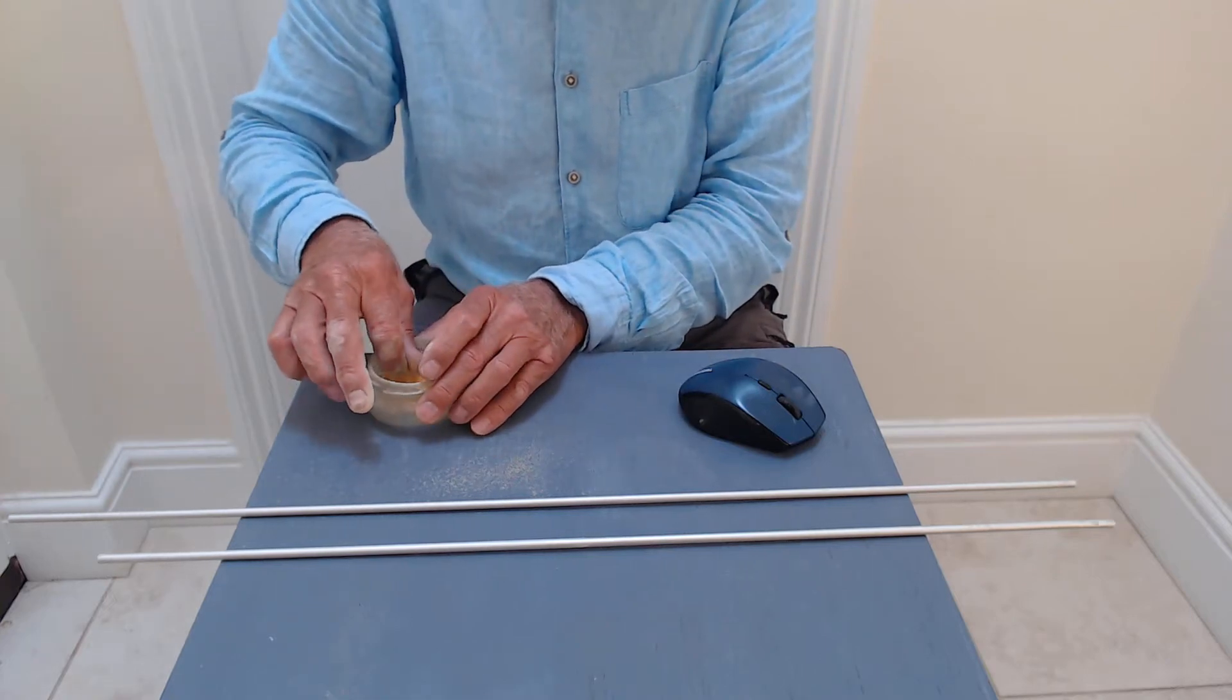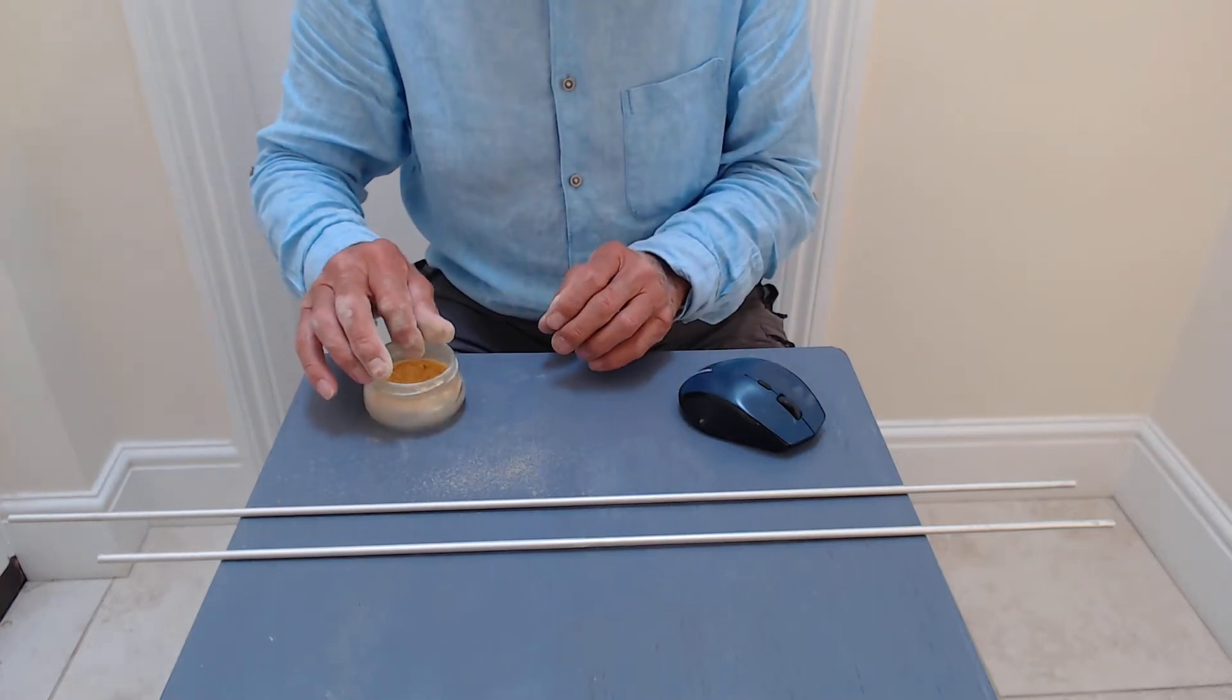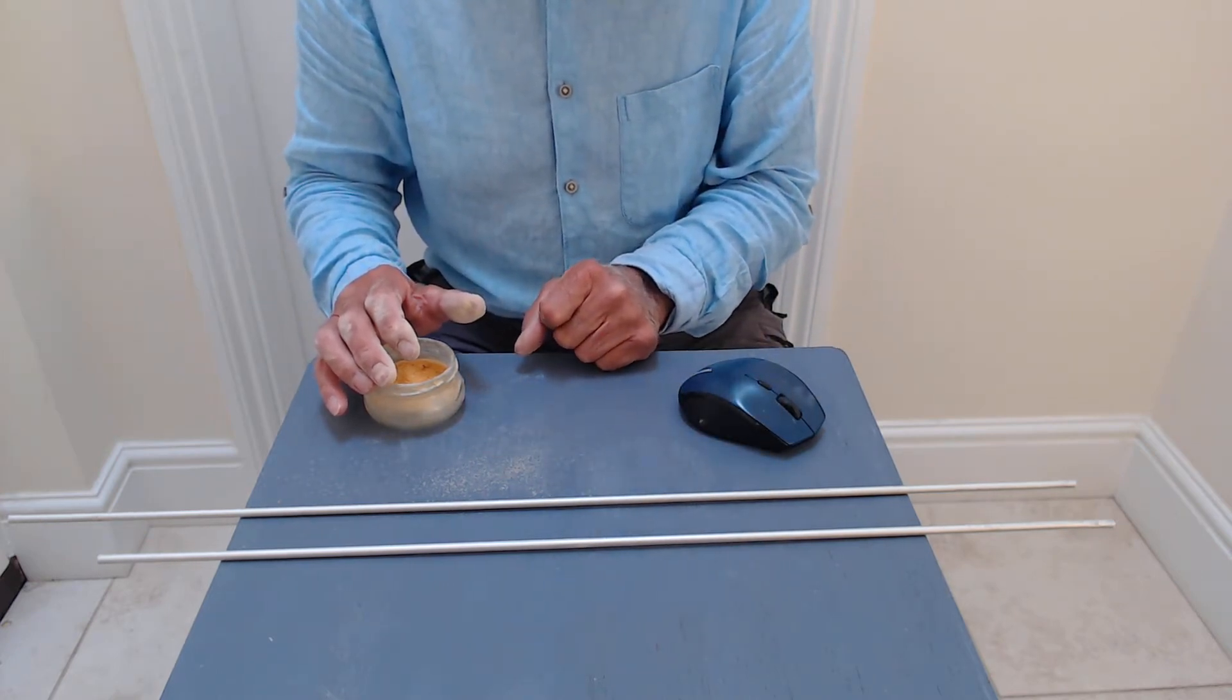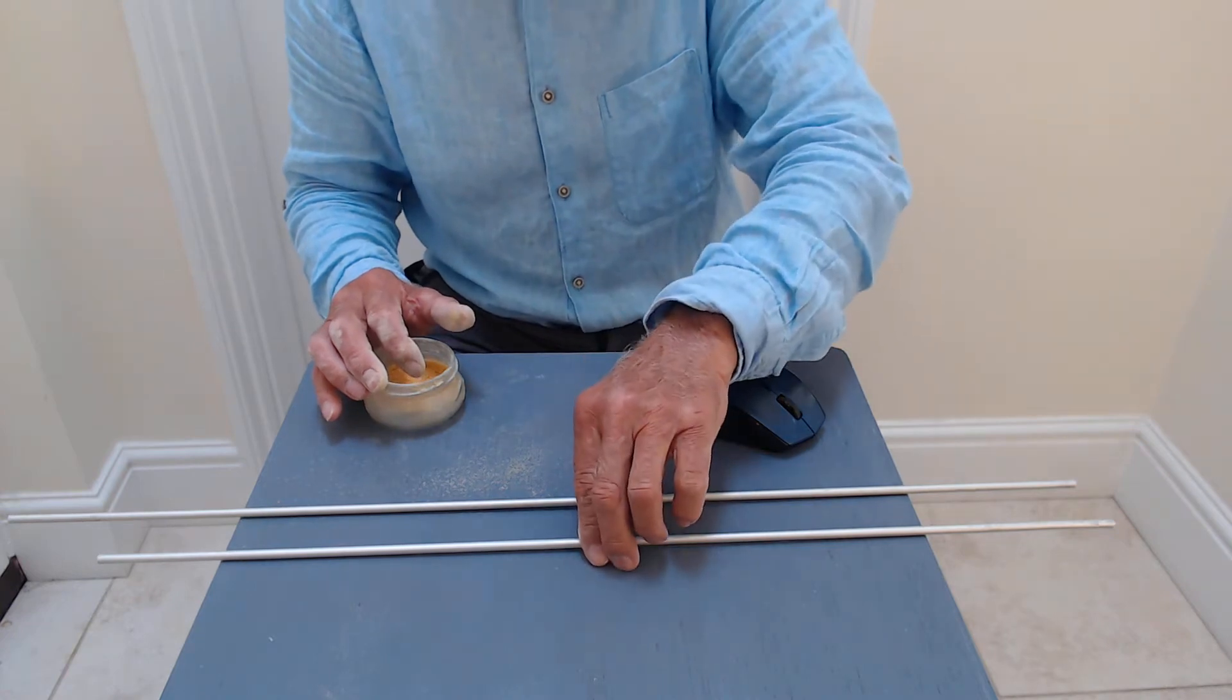This experiment is about resonance. The resonance in two aluminum rods, 1.65 of a meter long and 1.72 of a meter long.